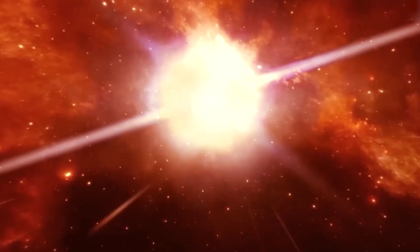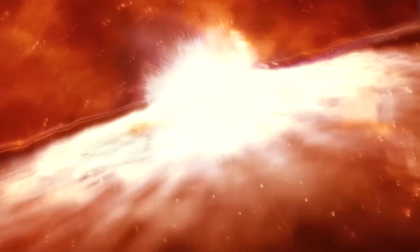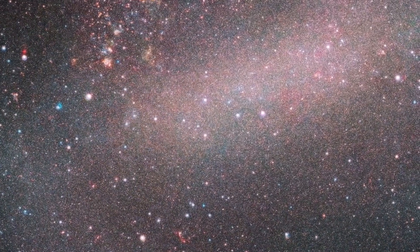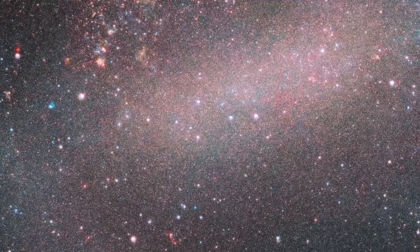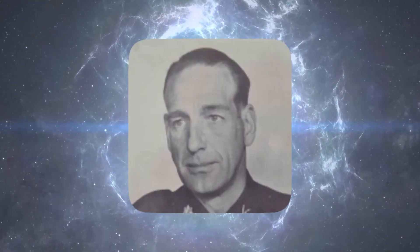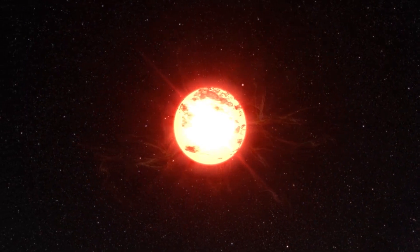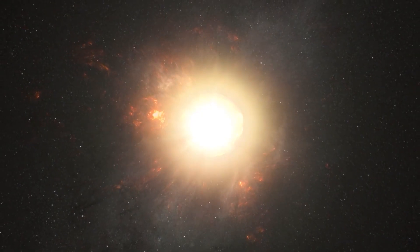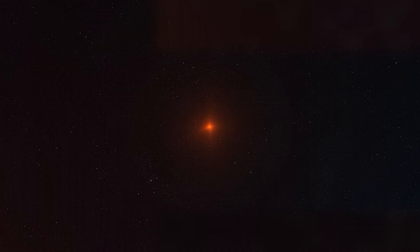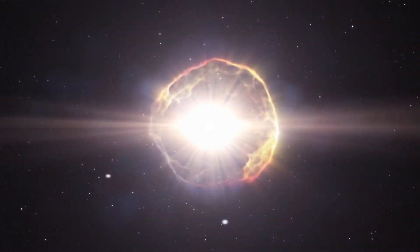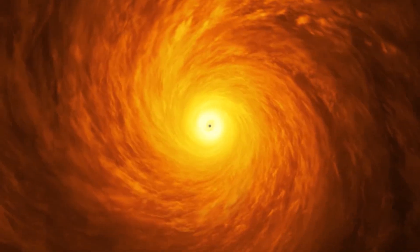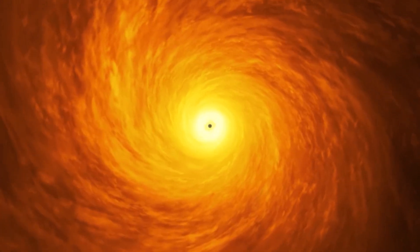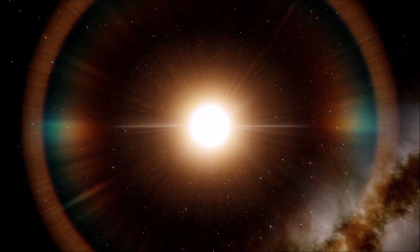The open cluster Stephenson 2 is known to be one of the most massive open clusters in the Milky Way. This was initially noticed by American astronomer Charles Bruce Stevenson, who reported the discovery in June 1990. The cluster was discovered after a space deep infrared objective prism survey. The cluster is home to a core group of 26 red supergiants, which is the most extensively known population in the Milky Way, and this was first identified in a study published in 2007.